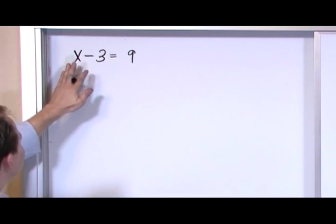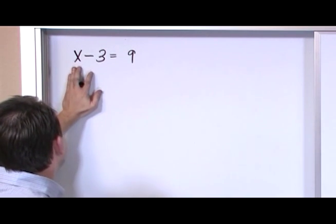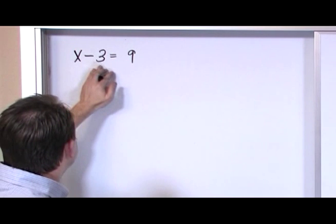Remember, the goal is to get x by itself. You want him by himself. The only thing standing in your way is you have this minus 3 here.